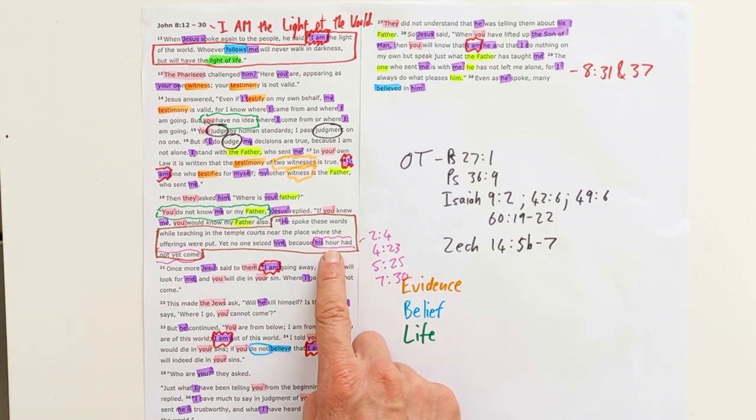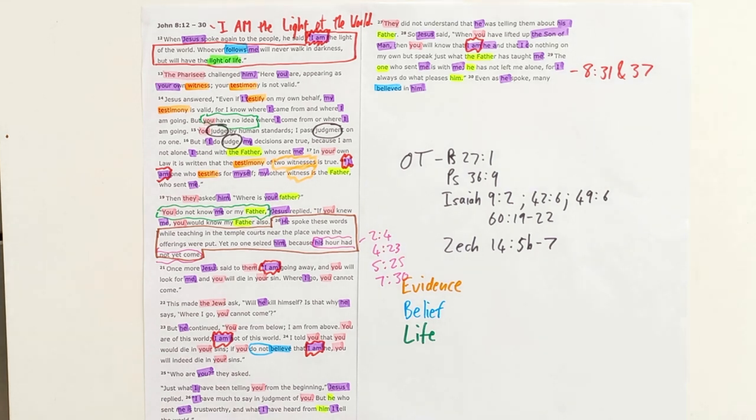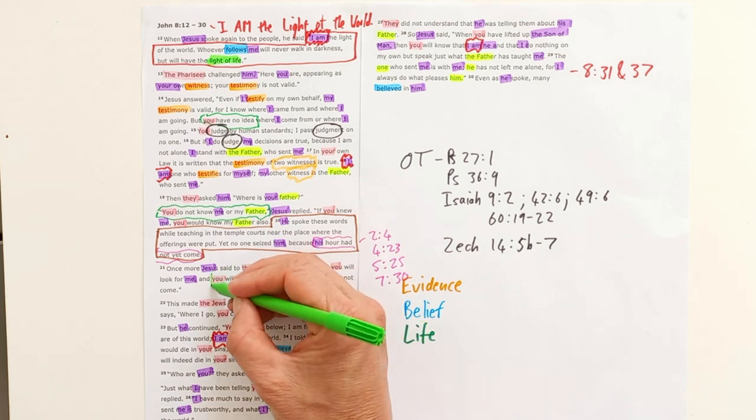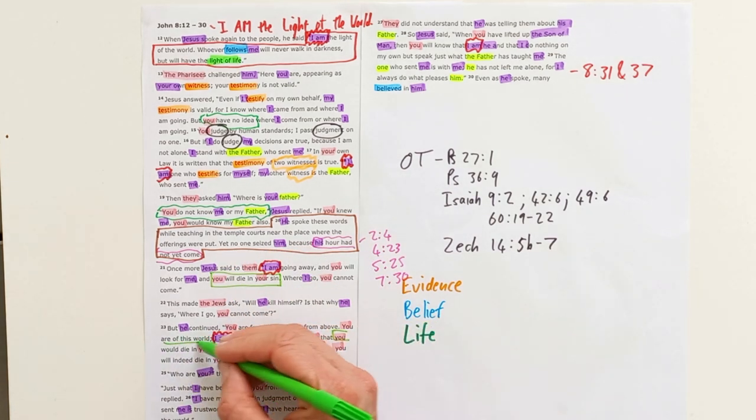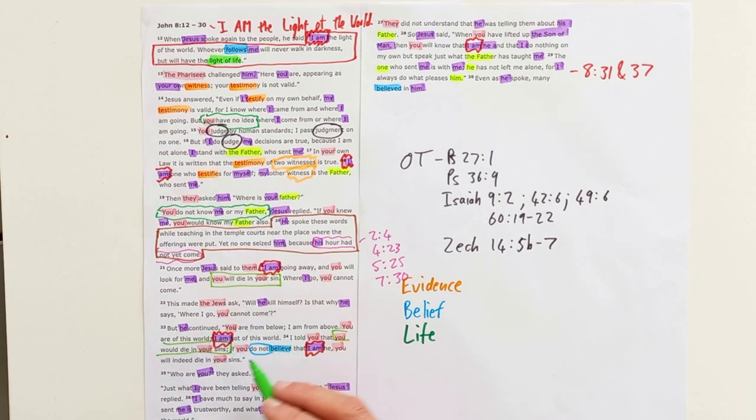But we're not there yet. And Jesus makes some other shocking claims to these religious Jews, the leaders of the church of that day. He says 'you will die in your sins. I told you that you would die in your sins.'